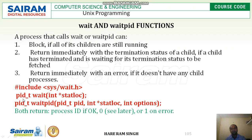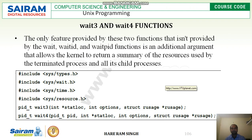The prototypes of wait and waitpid are: pid_t wait(int *statloc) and pid_t waitpid(pid_t pid, int *statloc, int options). Both return the process ID if OK, or 0, or minus 1 on error.